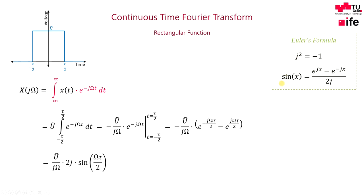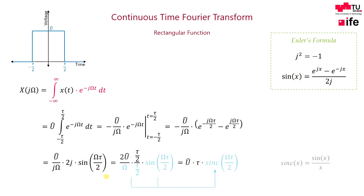Now we can use Euler's definition of the sine function to rewrite the exponential functions into a sine function. Finally, we expand both numerator and denominator by the term tau over 2 to obtain the same denominator as the argument of our sine function.